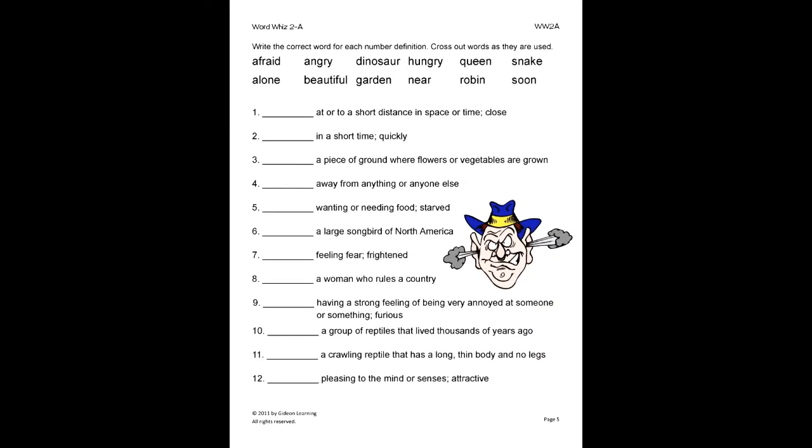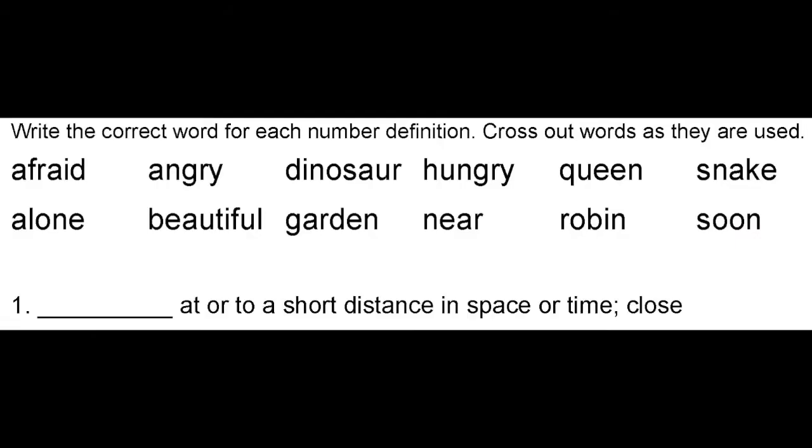On this activity, the student will write the correct word for each number definition. Cross out words as they are used. Let's look at number one. First, read the given definition. At or to a short distance in space or time. Close. From reading our definitions page in the front, we know near matches this definition. So we cross out near and neatly write it on the line.